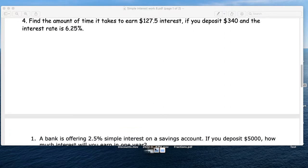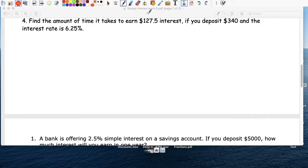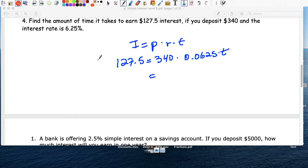For number 4, the amount of time, so T is our unknown here. If you want to earn $127.50 after putting $340, the interest rate that you're given is 0.0625, how long do you have to leave the money in there to earn $127?